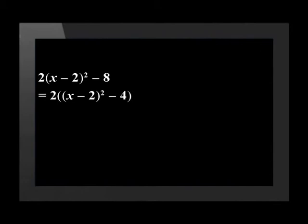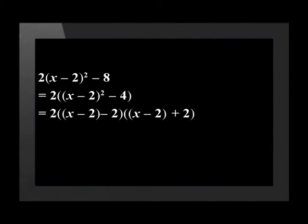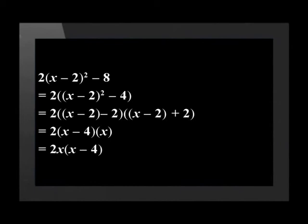Within the brackets we see two terms, which means it should either be a difference of two squares or a difference of two cubes. As both terms are square numbers, we do a difference of two squares, giving us 2(x - 2 - 2)(x - 2 + 2). Adding the like terms within the brackets, we have a final answer of 2x(x - 4).